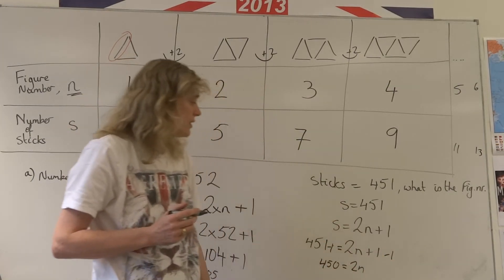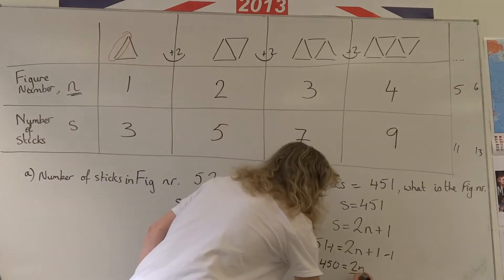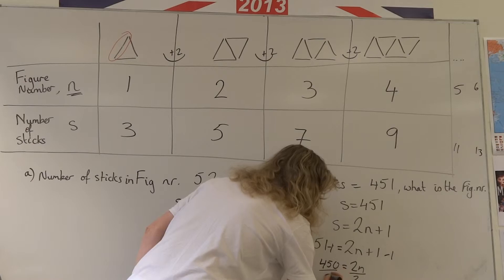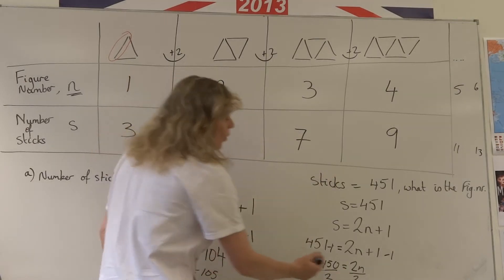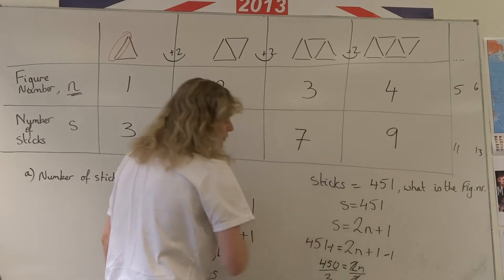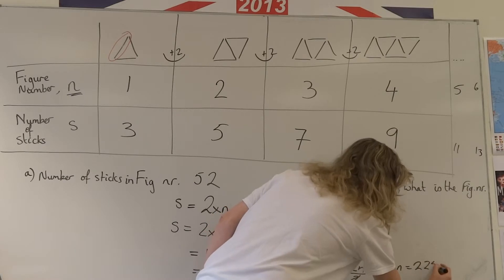So I know that two lots of n is 450. To get n by itself I divide both sides of the equation by two to get one lot of n. So one lot of n will be 450 divided by 2, n equals 225.